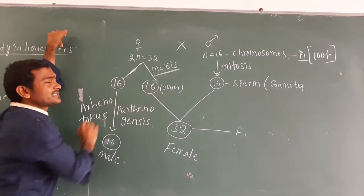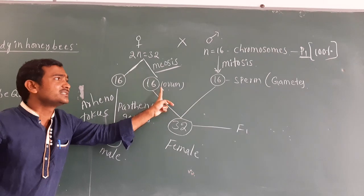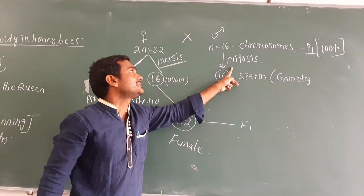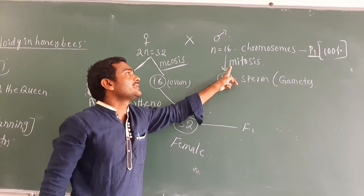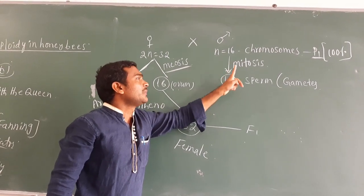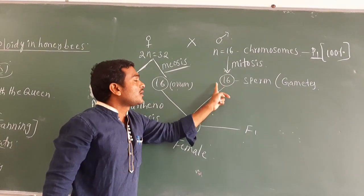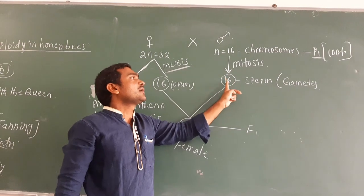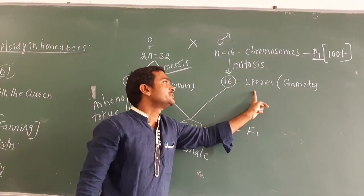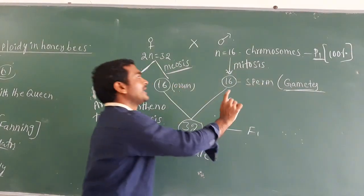Two ova each with 16 chromosomes are formed from the female's meiosis. The male (drone) undergoes mitosis, so the chromosome number remains constant at 16, forming sperm as gametes.